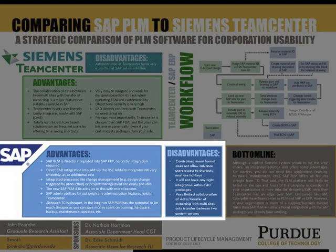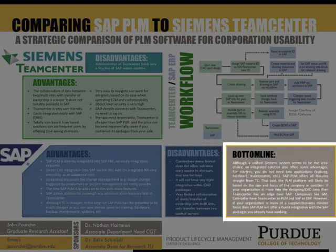SAP provides integration between all departments, but it will not have tight integration within CAD packages. Bottom line, although a unified Siemens system seems to be the ideal choice, an integrated solution also offers advantages — you do not need two applications, training, hardware, maintenance, etc. The PLM platform will likely be based on the size and focus of the company in question. If your organization is more into CAD or designing, then Teamcenter has an edge over SAP — companies like GM and Caterpillar use Teamcenter as PLM and SAP as ERP. However, if your organization is more of a supplier or business-minded focus, then SAP PLM will offer fluid integration with the SAP packages you already have working.